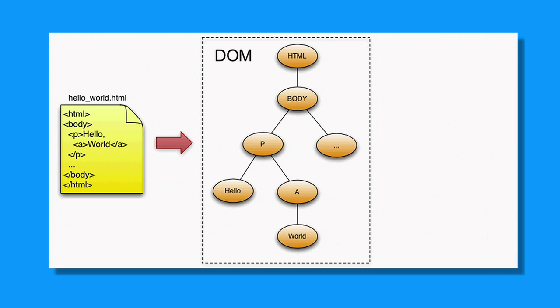DOM is a tree-like data structure that represents the HTML for a web page. And this is the same API that is used by web developers today to make modern web applications like Google Maps.